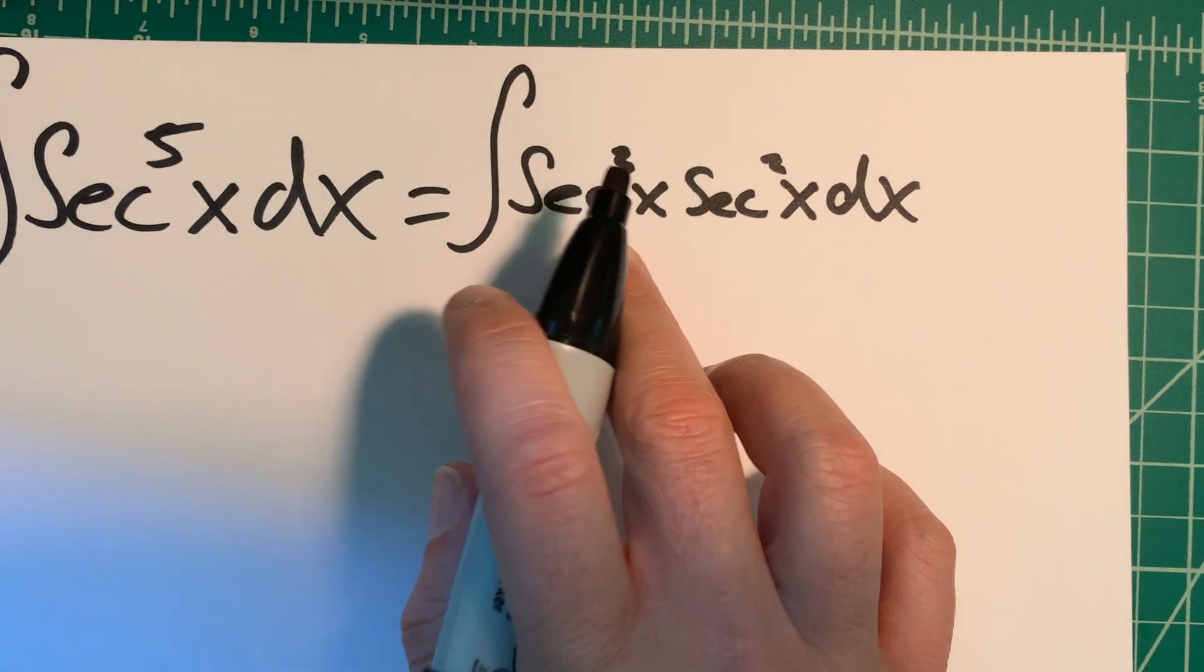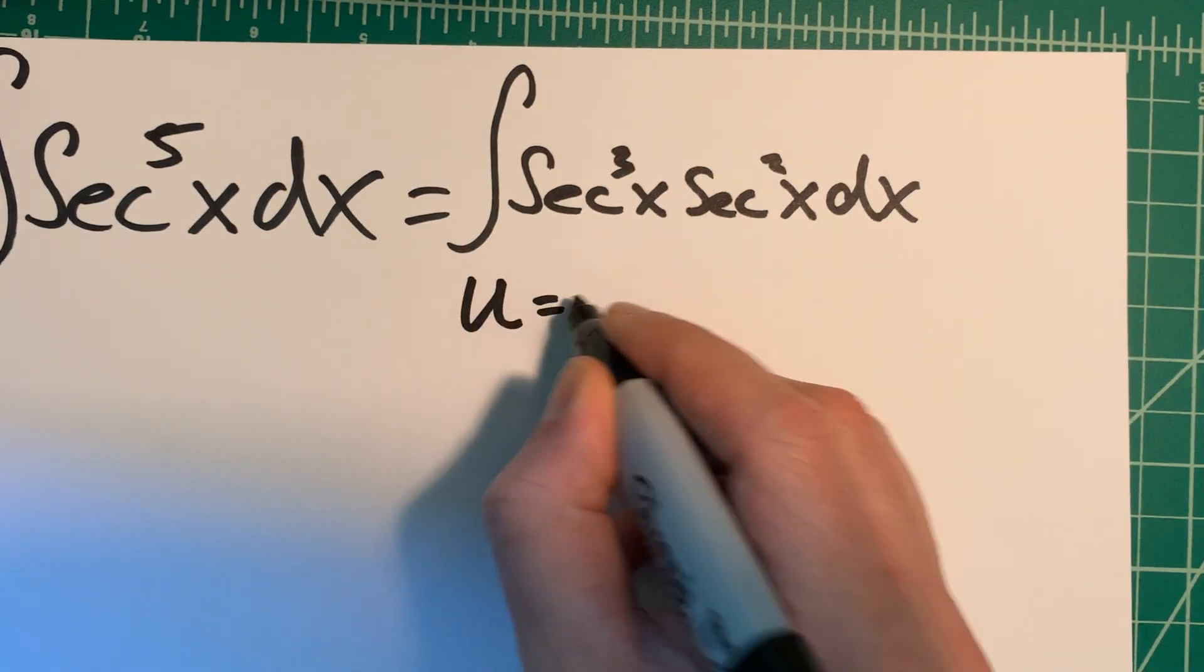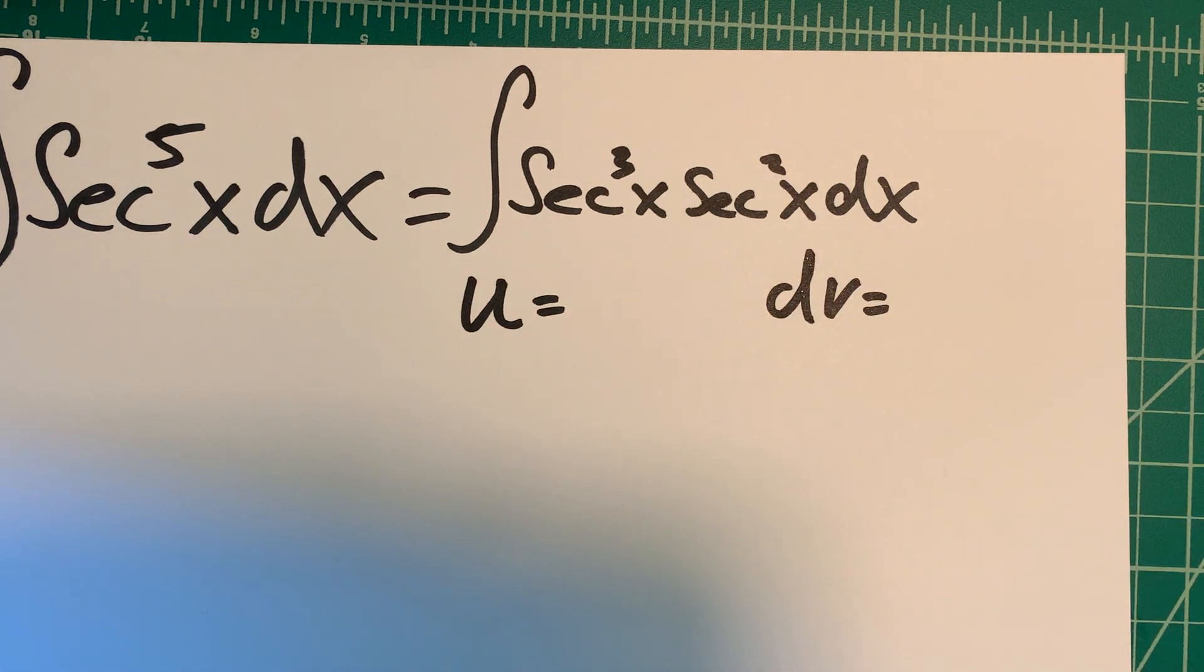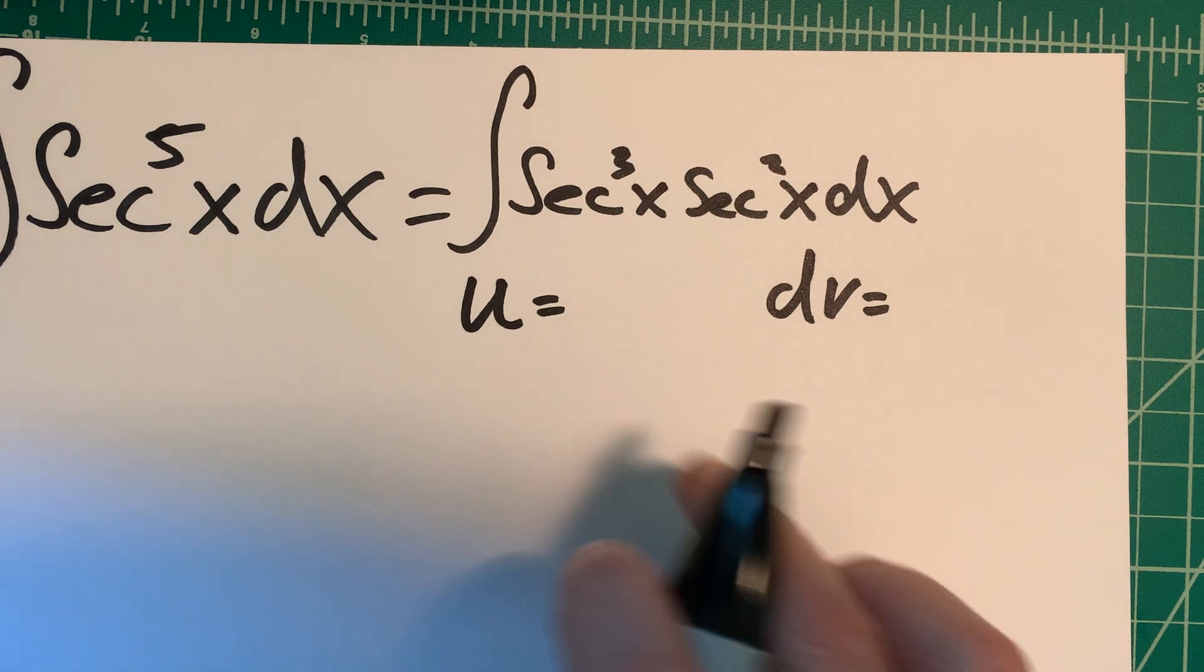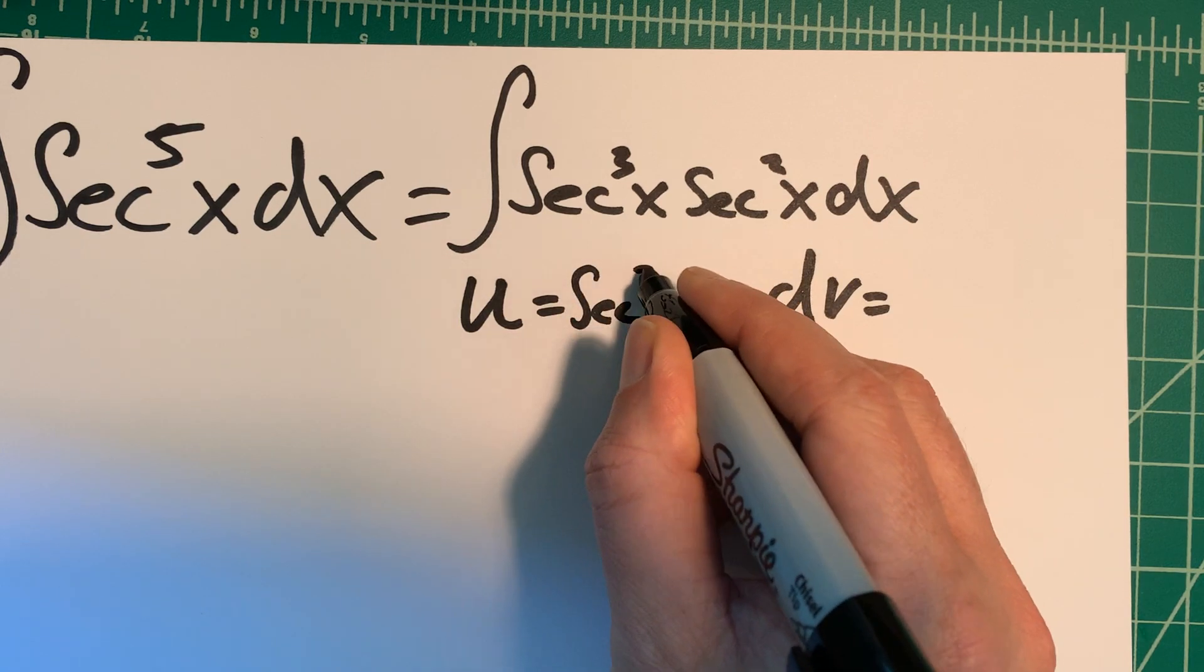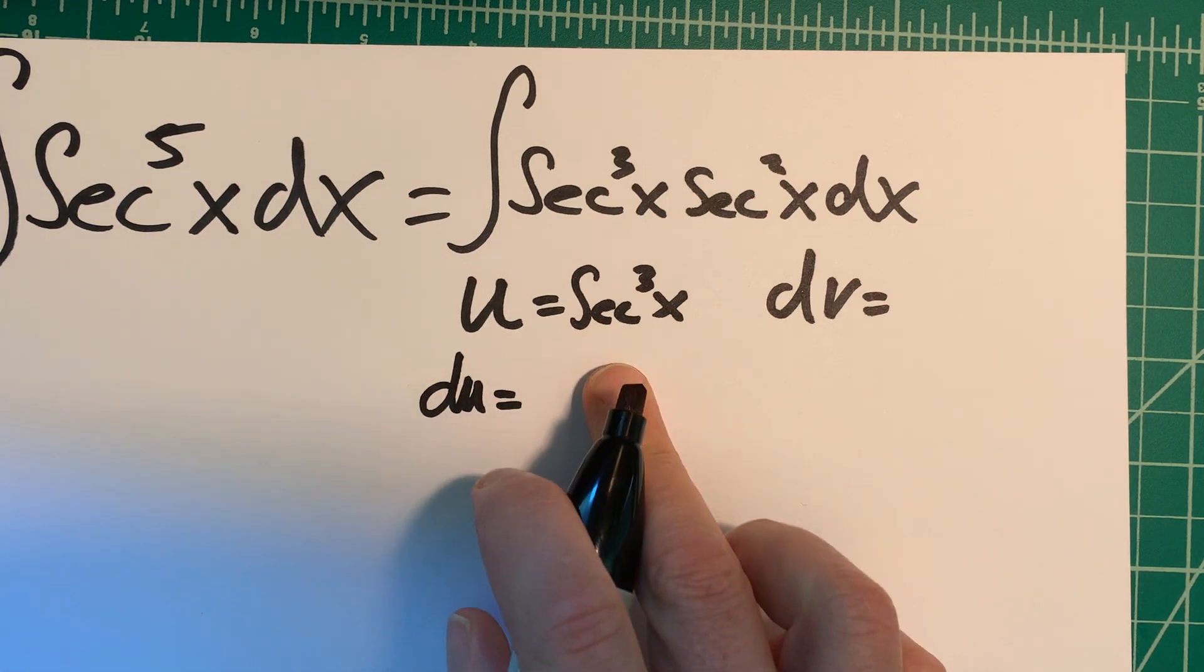So what are we going to do? Now we can do parts because we have two different functions. So I'm going to say u equals something and dv equals something. And here's where I have to make the choice, and that choice is going to make this problem easy or hard. I'm going to choose u to be secant to the third x. Then du equals what?